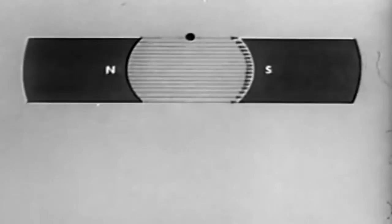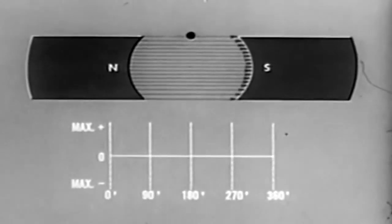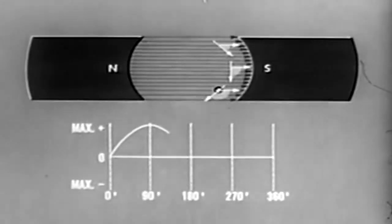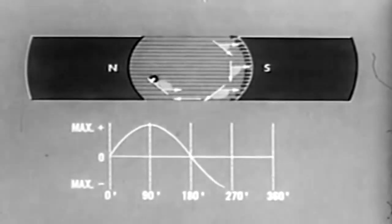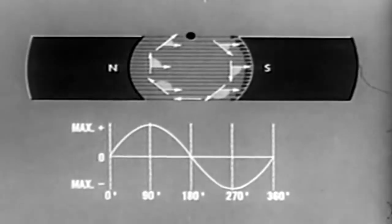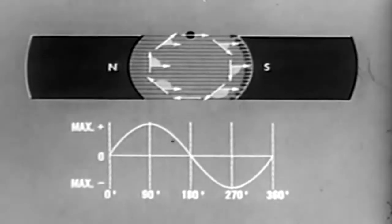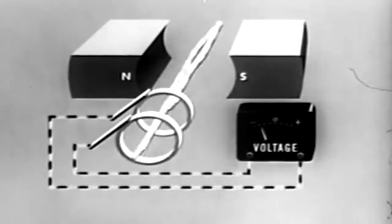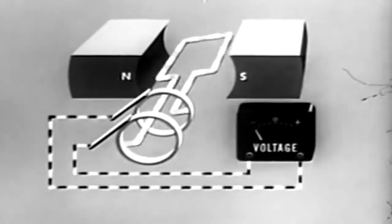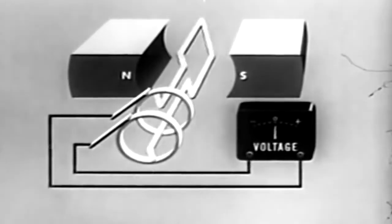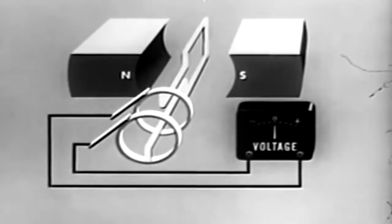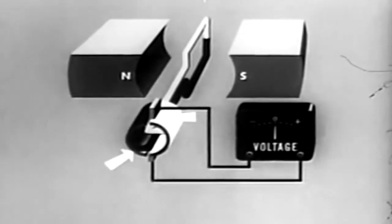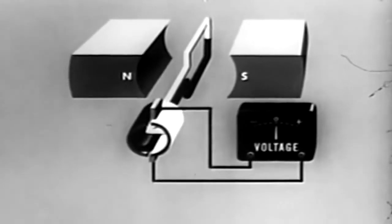A graph of EMF versus conductor position during one revolution will be a sine wave representing alternating current, or AC. All rotary generators produce AC internally. What you have seen so far is really the theory and operation of a basic AC generator. But our purpose was to explain the principles of operation of a DC generator. To get direct current, we will attach each end of the conductor to a segment of copper forming a commutator — now our machine is a DC generator.